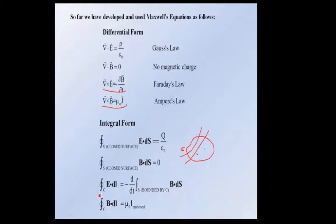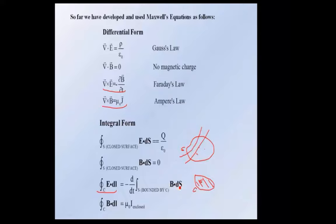Faraday's law takes the form of a line integral around a path C. We have path C and there's some surface S bounded by C. When we take the line integral of E around this path and differentiate B dot dS — which is the flux through the surface — take the time derivative with the minus sign, which tells us the direction of the field, we get this integral here.